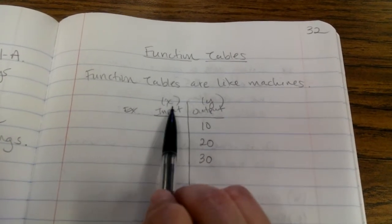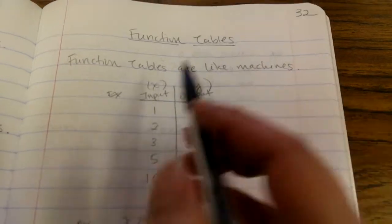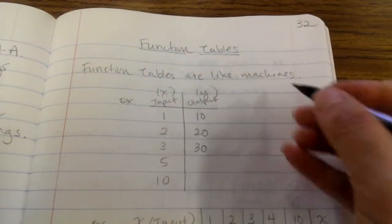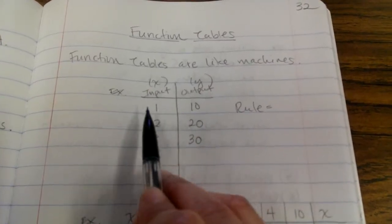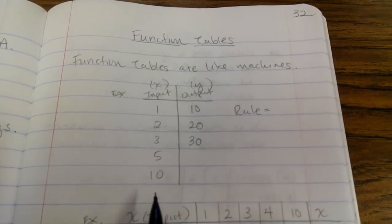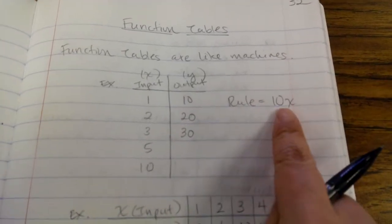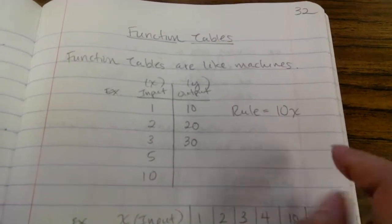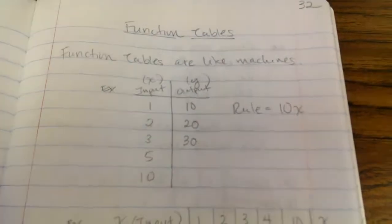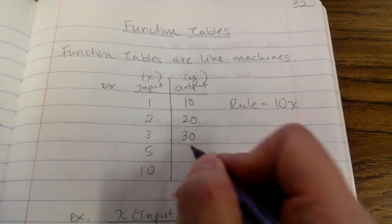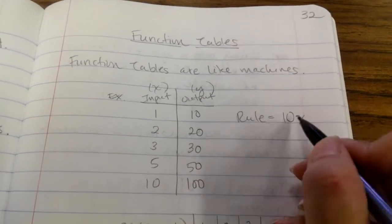In math we use x for the input and y for the output, but you can use any variables you want to represent the input and the output. So what are we doing to our x's to get our y's? The rule is that whatever we're putting in, the machine is multiplying it by 10 to get our output. So our rule is 10x — not x10, not '10 times x'; we just put the variable next to the number to show multiplication. If we put in $5, the machine multiplies it by 10 and we get $50. If we put in $10, the machine multiplies it by 10 and gives us $100. So the rule is 10x.